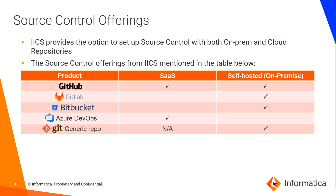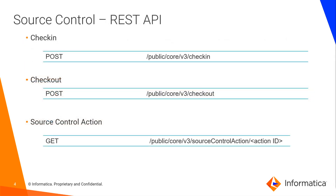When we look at the Source Control APIs, we have six of them. The first one is the Check-in API followed by the Check-out. They are basically to perform the Check-in and Check-out of either individual assets or projects or folders as a whole. The Source Control Action API is a GET call that will tell you the status of any Check-in or Check-out operation that has been called.